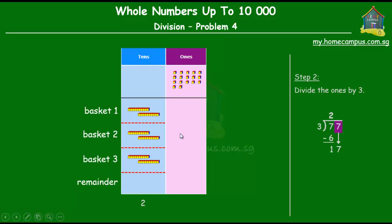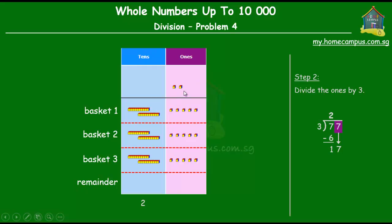Let's bring our focus back to the middle of the screen and start dividing the seventeen ones among the three baskets. We put one apple each in the three baskets, then one more in each, then another, then some more, and then some more. In the end there are just two apples left. We cannot divide two apples equally among three baskets. So when we divided seventeen apples equally among three baskets, each basket received five apples, and there were two apples left that couldn't be divided — a remainder of two.